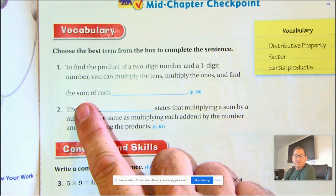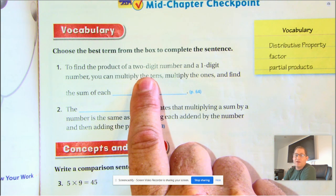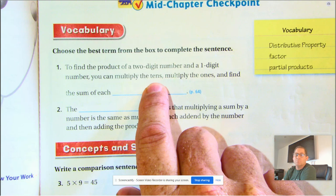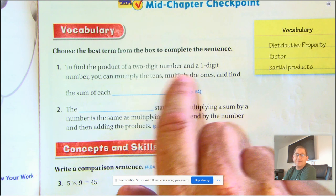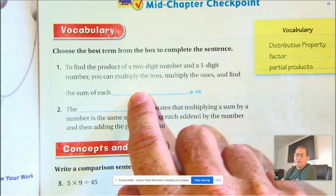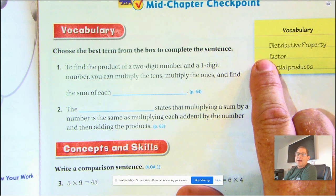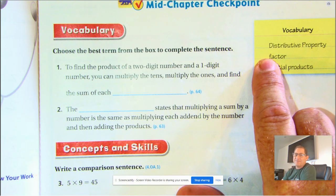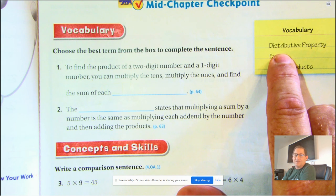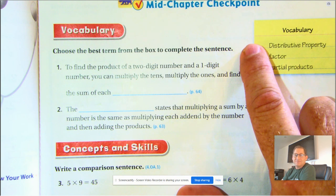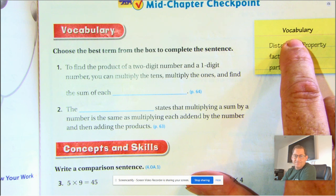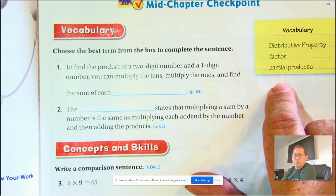Now, to find the product of a two-digit number and a one-digit number, you can multiply the tens, multiply the ones, and find the sum of each. Well, let's think about this. Factor doesn't have anything to do with adding. That would be multiplying. So it's not factor. And that doesn't express the distributive property. So it must be partial products.